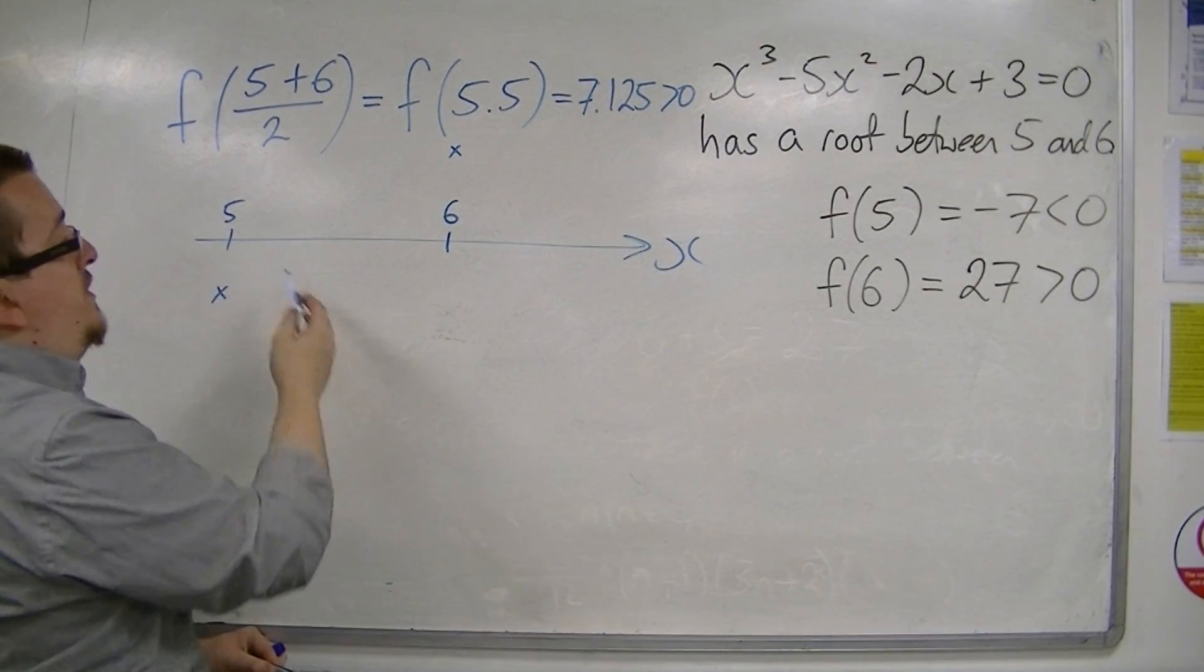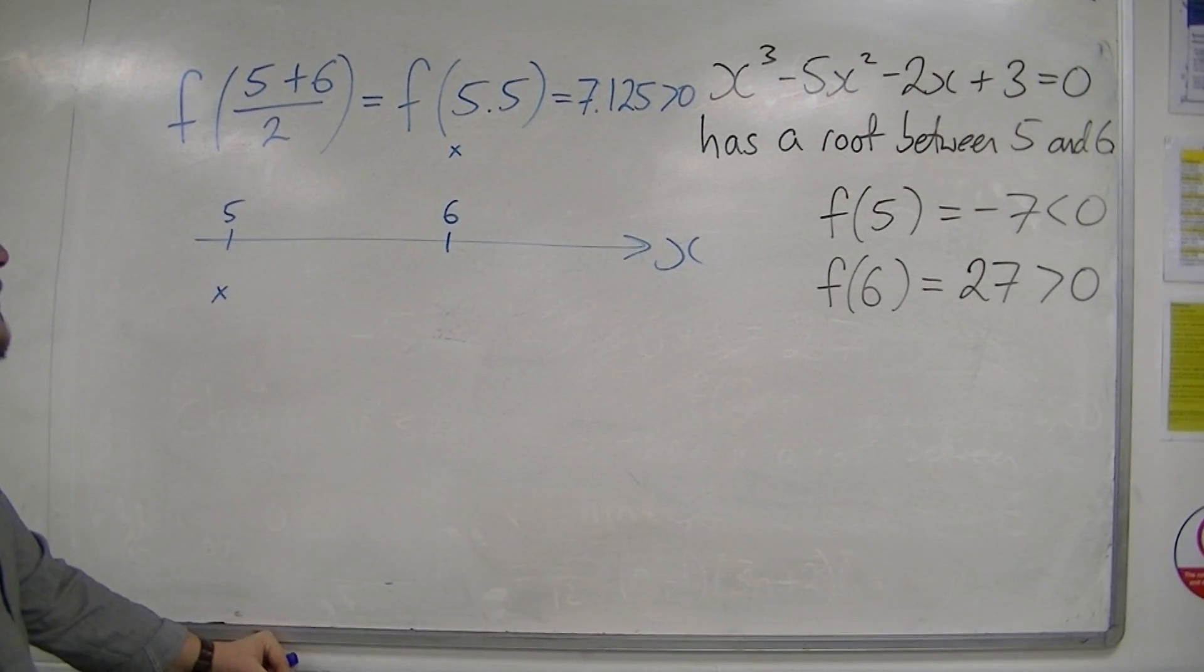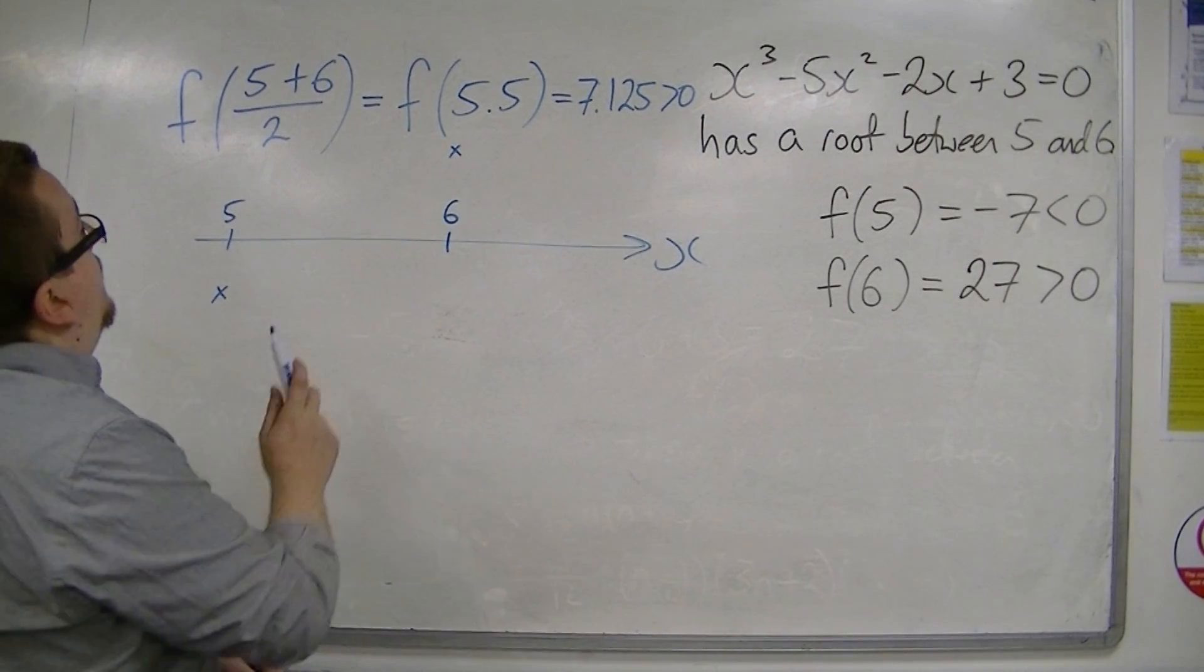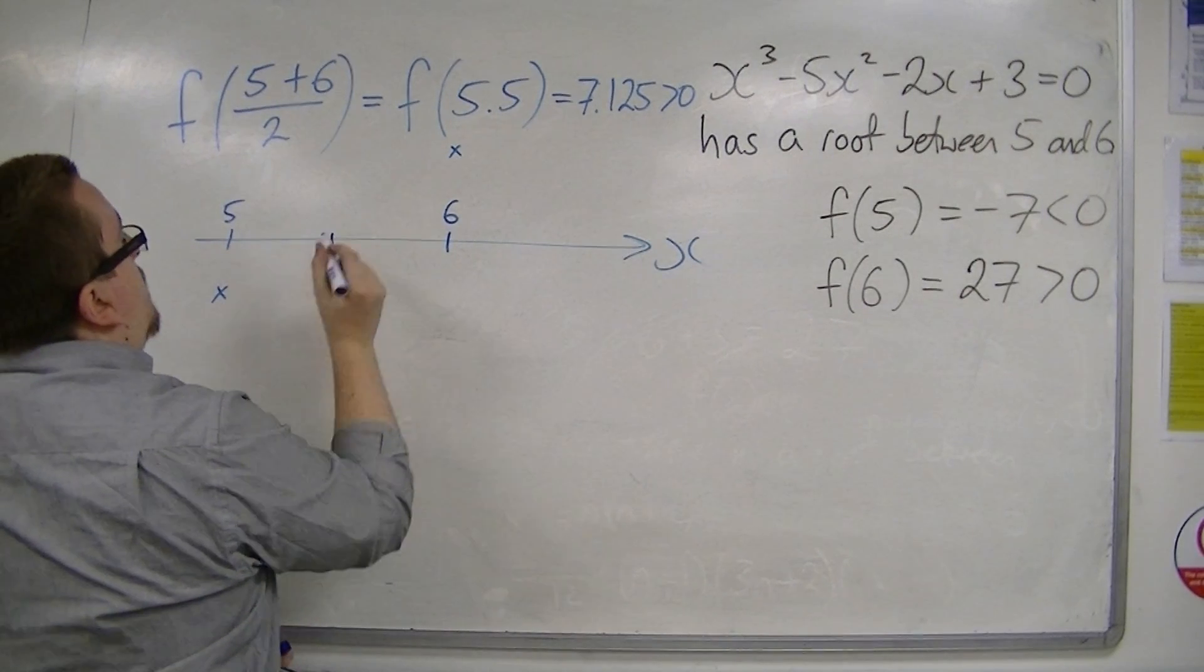So at some point, the curve must cross the x-axis. Now we've found that f of 5.5 is 7.125,